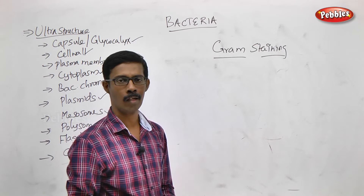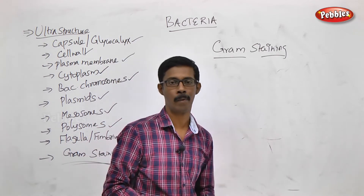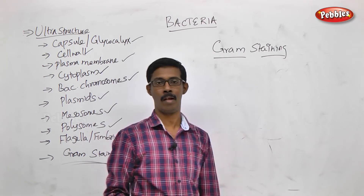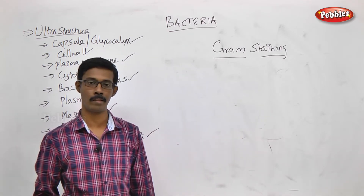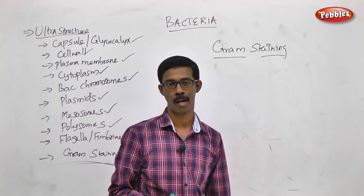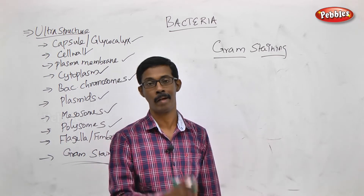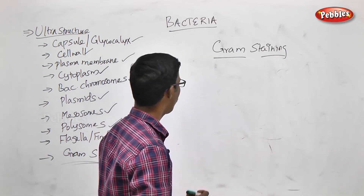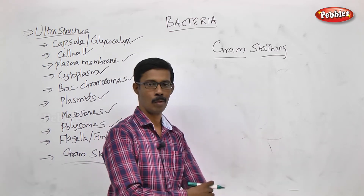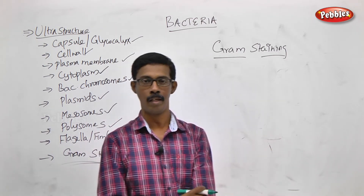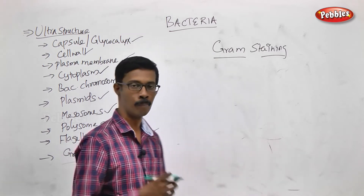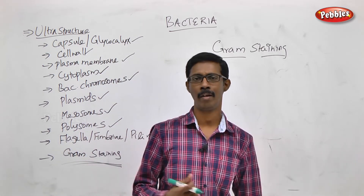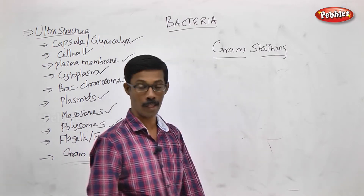This staining technique is very important. If you are looking at an unknown bacteria in the lab, immediately you have to go for Gram staining. Gram is a scientist's name — Christian Gram. His name is Christian Gram. In the 19th century, he developed this staining technique.